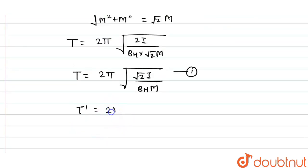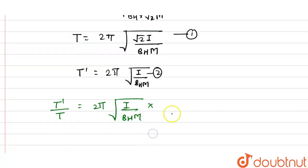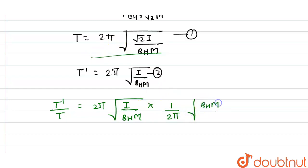Dividing the two equations to find T'/T: T'/T = [2π√(I / (B·M))] × [1 / (2π√(√2·I / (B·M)))]. The 2π terms cancel, and simplifying gives T'/T = 1 divided by √2 raised to the power 1/2.